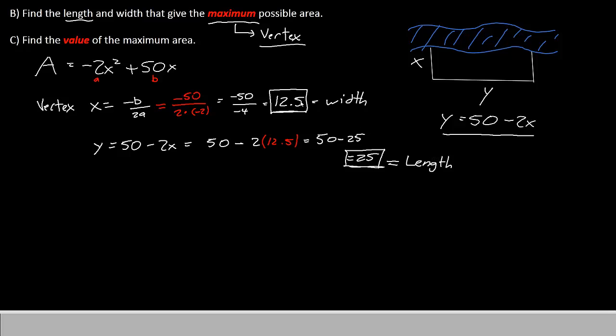So we have a width of 12.5 and a length of 25, and that's what's going to give us the maximum possible area. Now let's have a look at part C also. Part C says to find the value of the maximum area.